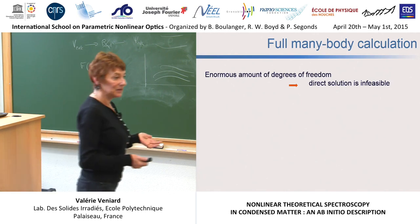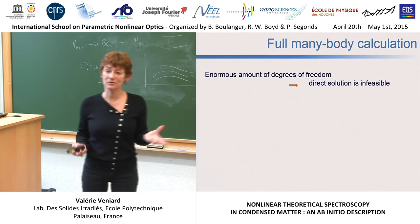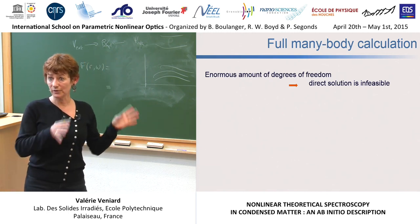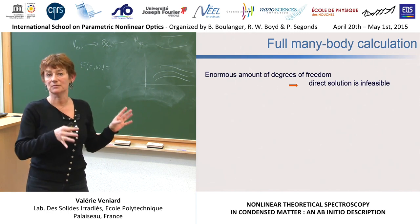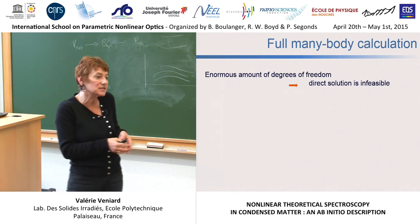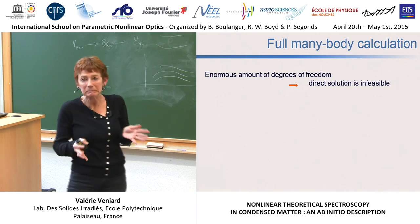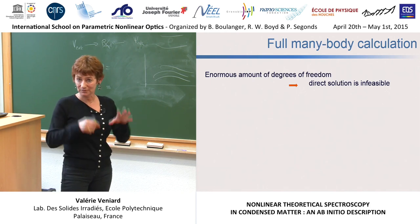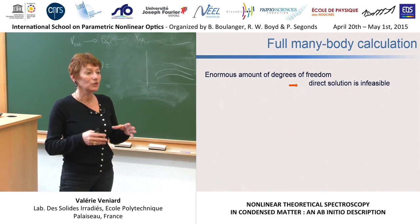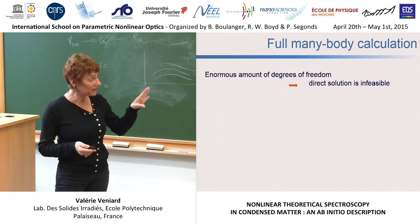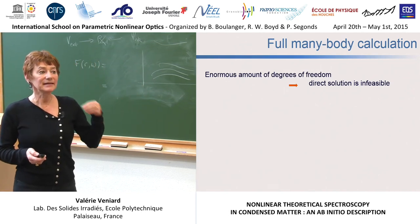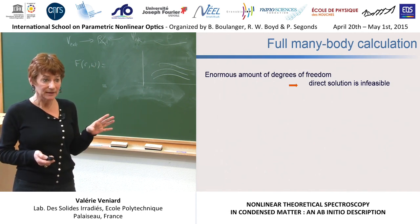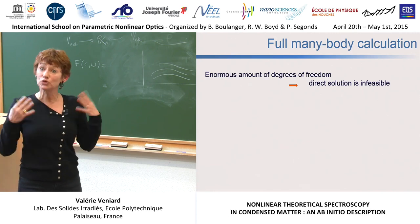For the second order, we have sums over two excited states, three matrix elements, and two denominators with all the energies and frequencies, plus all permutations among frequencies. Unfortunately, we don't know the wave functions because there is an enormous number of degrees of freedom. The direct solution is feasible only for very small systems — hydrogen, helium, maybe lithium. Even if we could obtain the solution, it would be extremely difficult to store: there was a cartoon showing that the floppy disks needed to store the wave function of a macroscopic solid would cover a square going from Nice to Marseille.